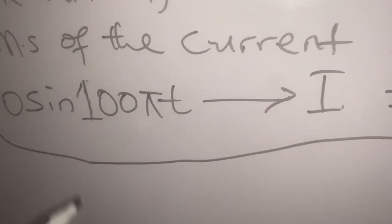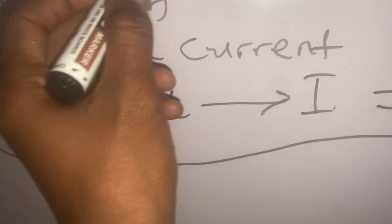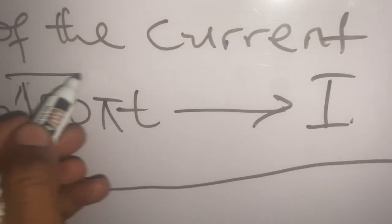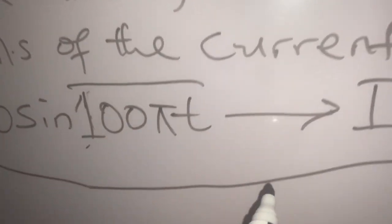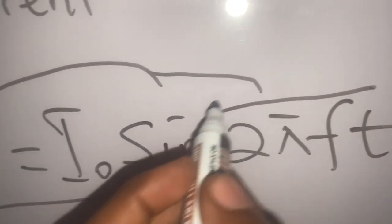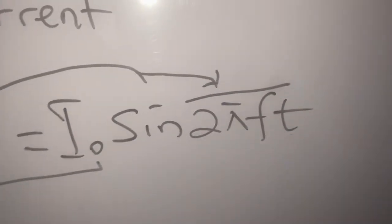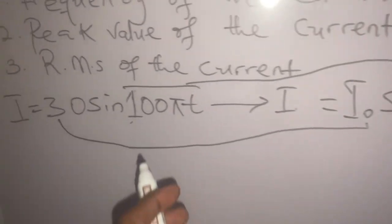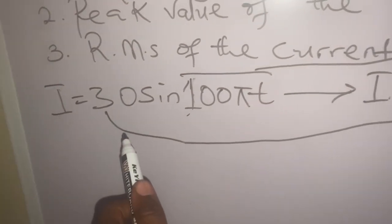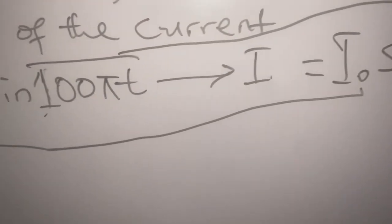If we compare the two equations, we see that 100πt corresponds with 2πft, and 30 corresponds with I₀.